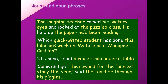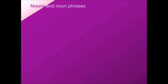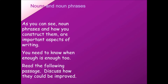Second version: 'The laughing teacher raised his eyes and looked at the puzzled class. He held up the paper he'd been reading. Which quick-witted student has done this hilarious work on my life as a whoopee cushion? It's mine, said a voice from under a table. Come and get the reward for the funniest story this year, said the teacher through his giggles.' Notice the differences between the two passages. By the careful selection of words before or after the noun, the first passage had a darker undertone while the second had a brighter spark to it.